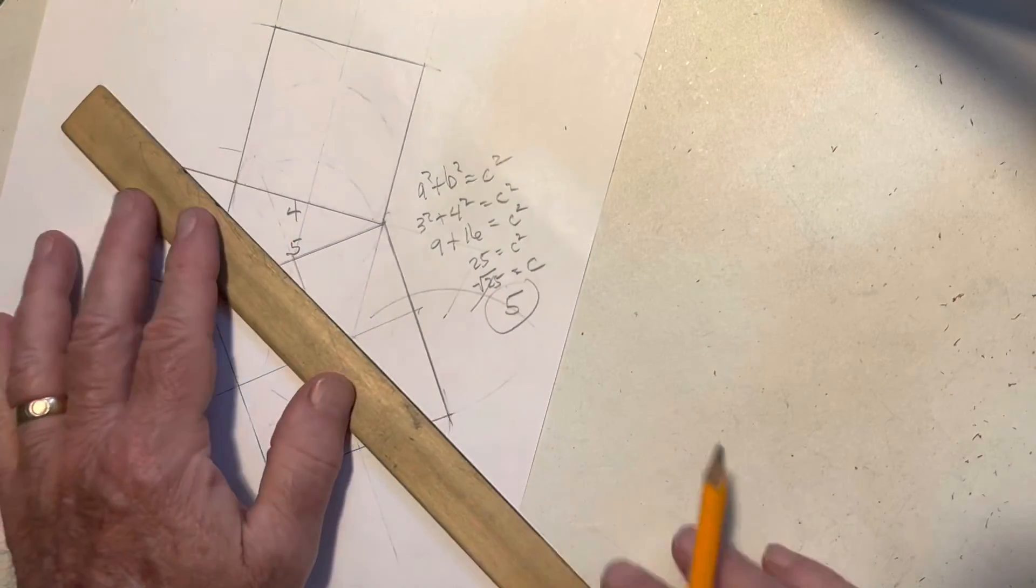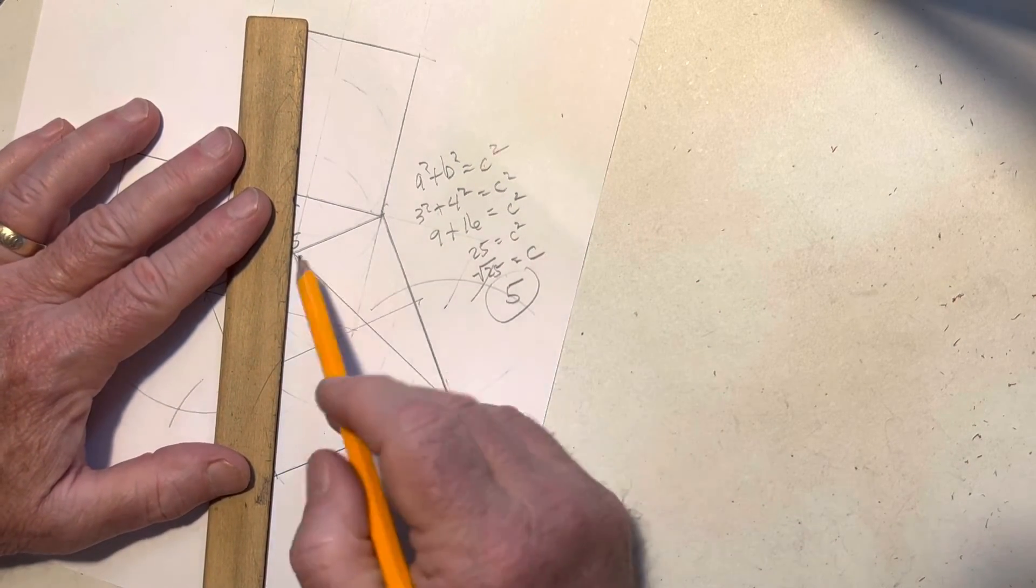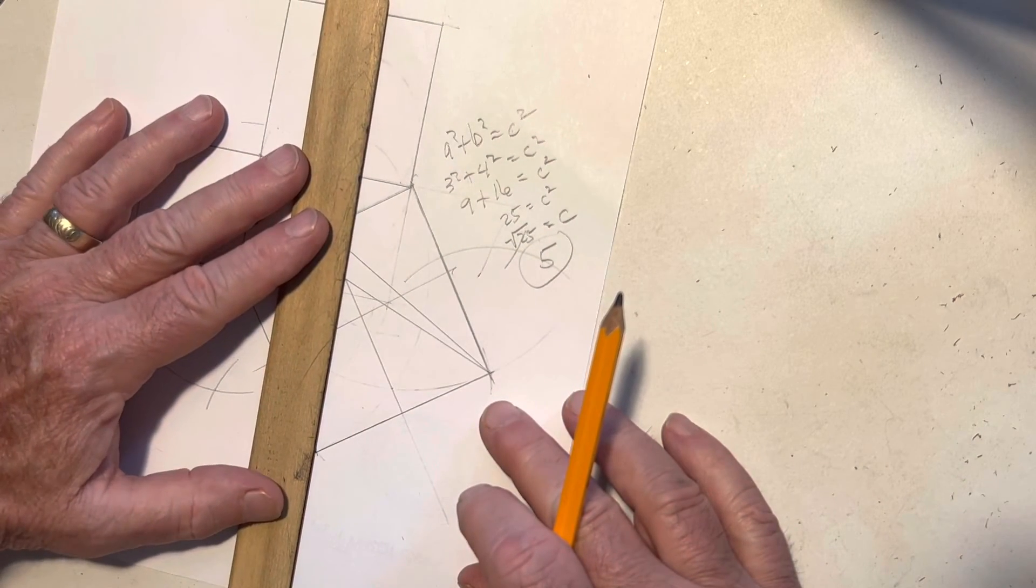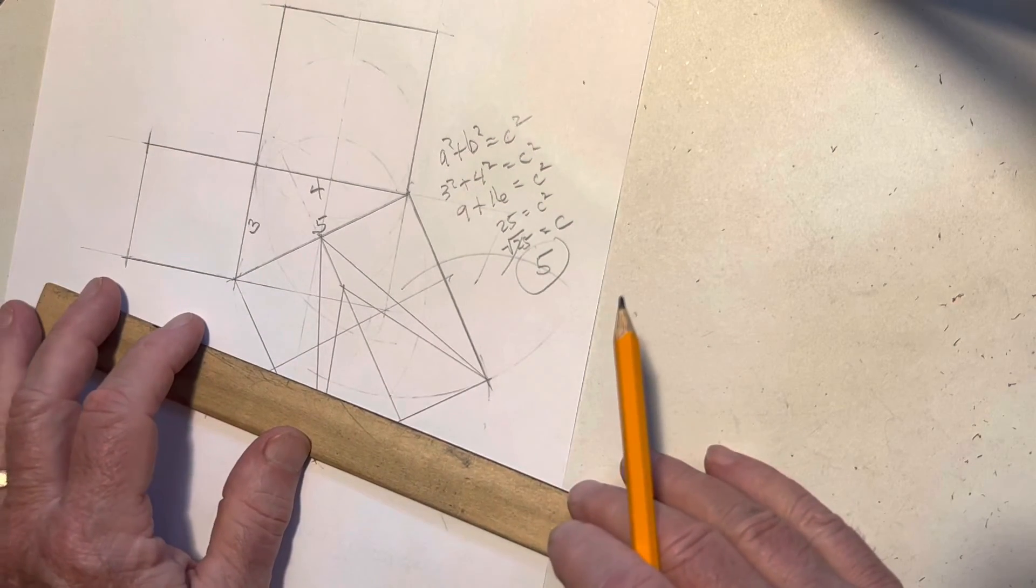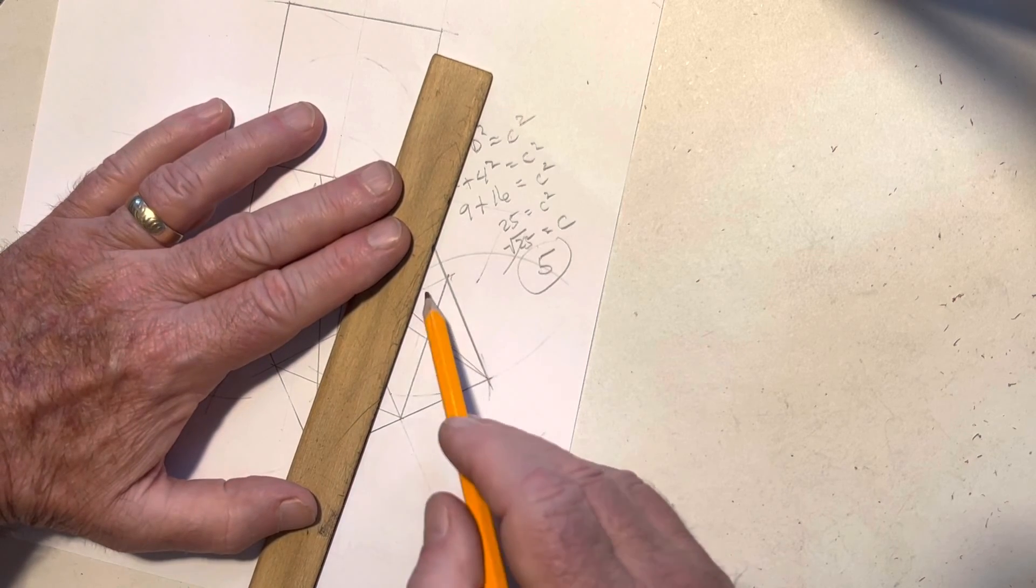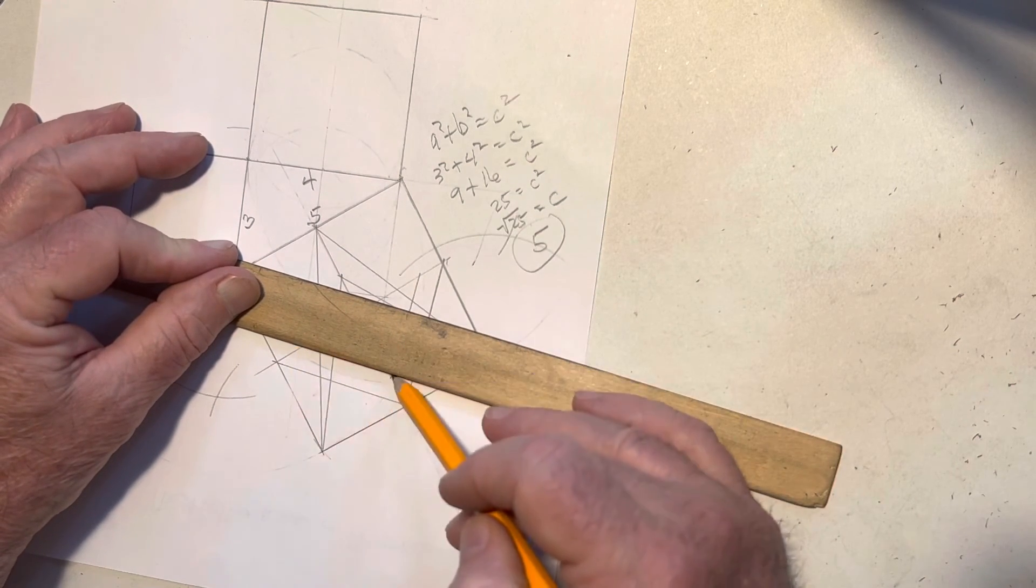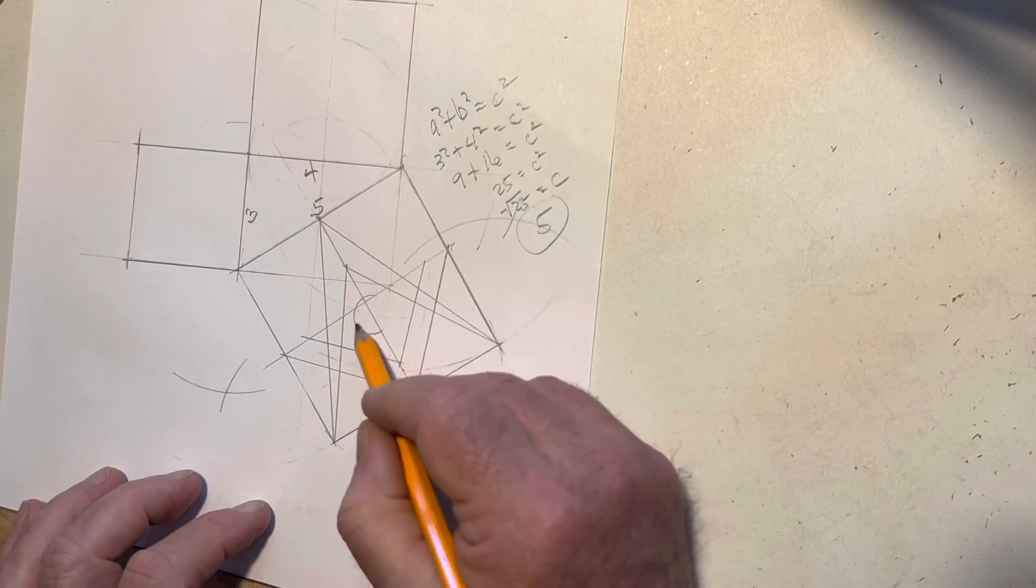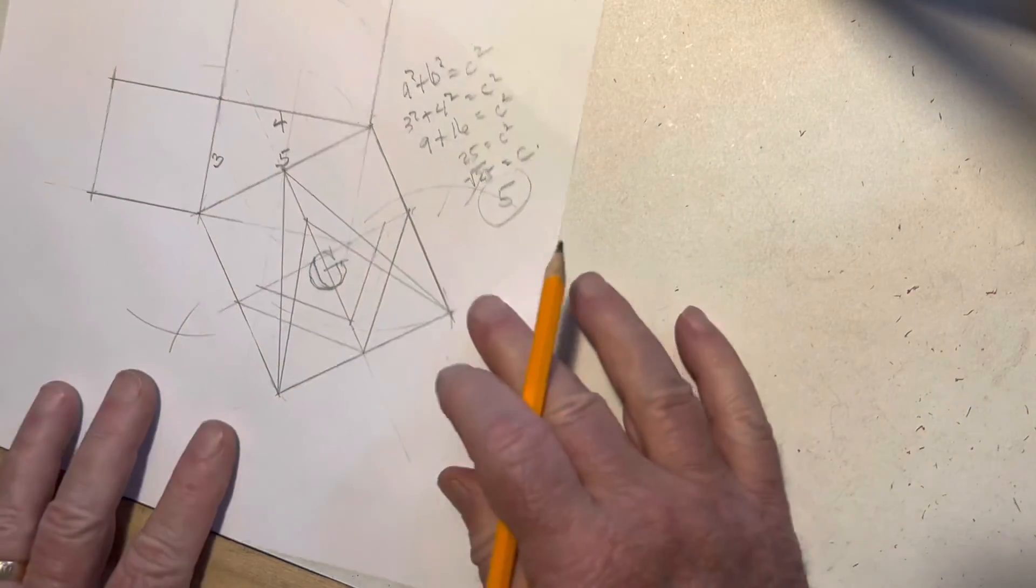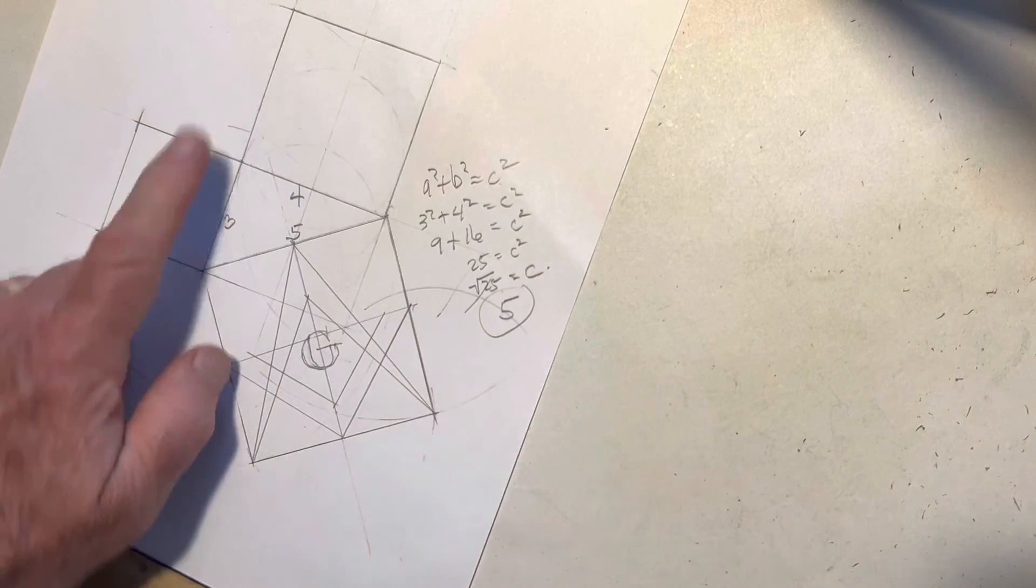All right. Now, let's go ahead. So here we have tribute to the Masons, and here we have it - the compass with the square. A squared plus B squared equals C squared. Thanks a lot!